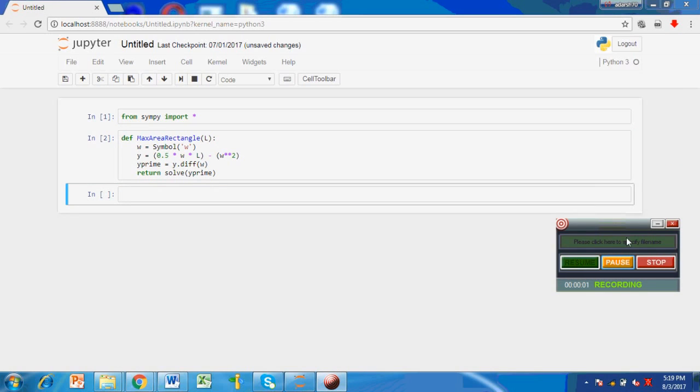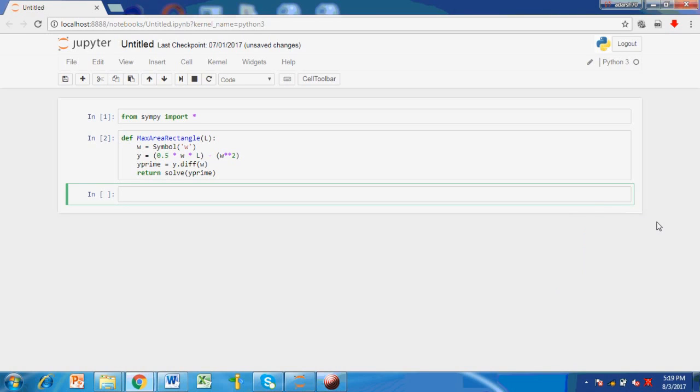We check the function max_area_rectangle for a length of 10 units and find that it yields 2.5 units.